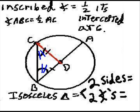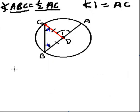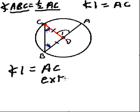Right over here I have an angle — I'm going to call it angle one. Angle one is a central angle, and it equals the intercepted arc AC. But I also know something else: angle one is also an exterior angle to that isosceles triangle BDC.